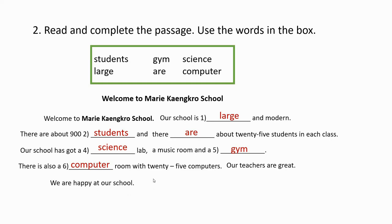Now you have to read it by yourself. Let's start. I'm going to read it again. Welcome to Maori Kangaroo School. Our school is large and modern. There are about 900 students and there are about 25 students in each class. Our school has got a science lab, a music room, and a gym. There is also a computer room with 25 computers. Our teachers are great. We are happy at our school.